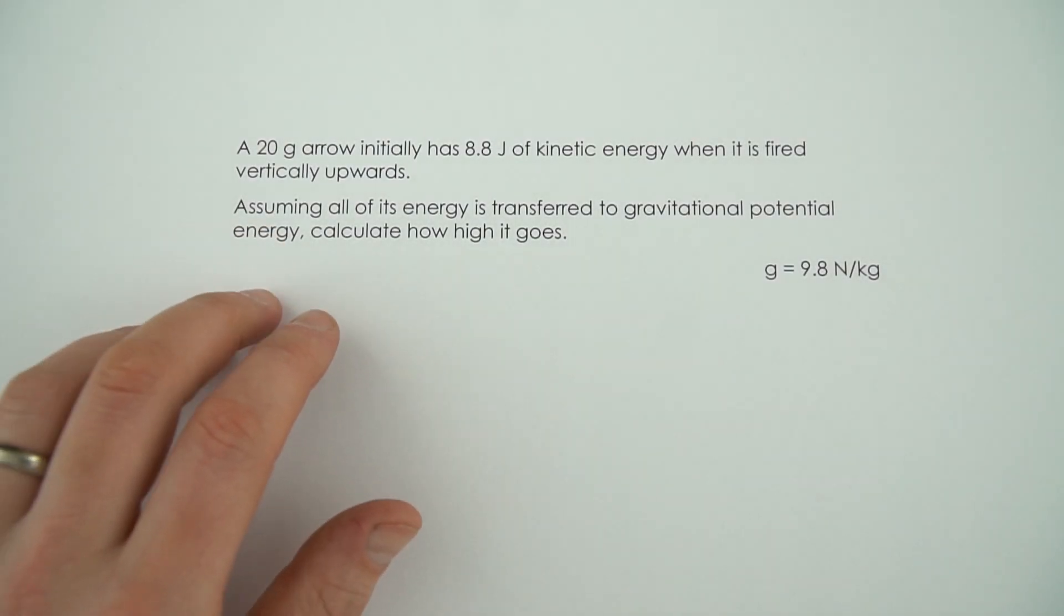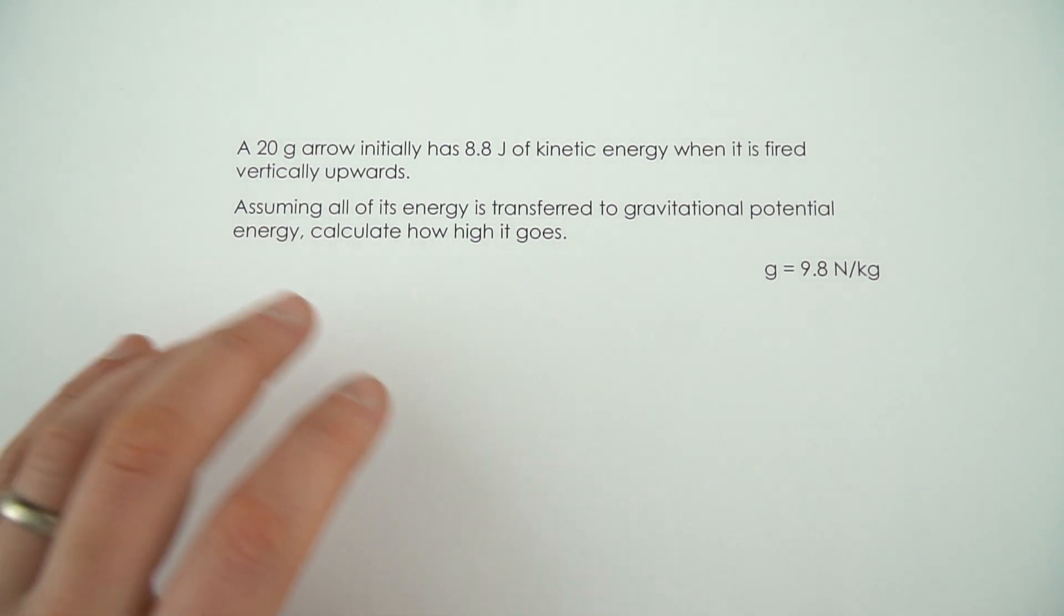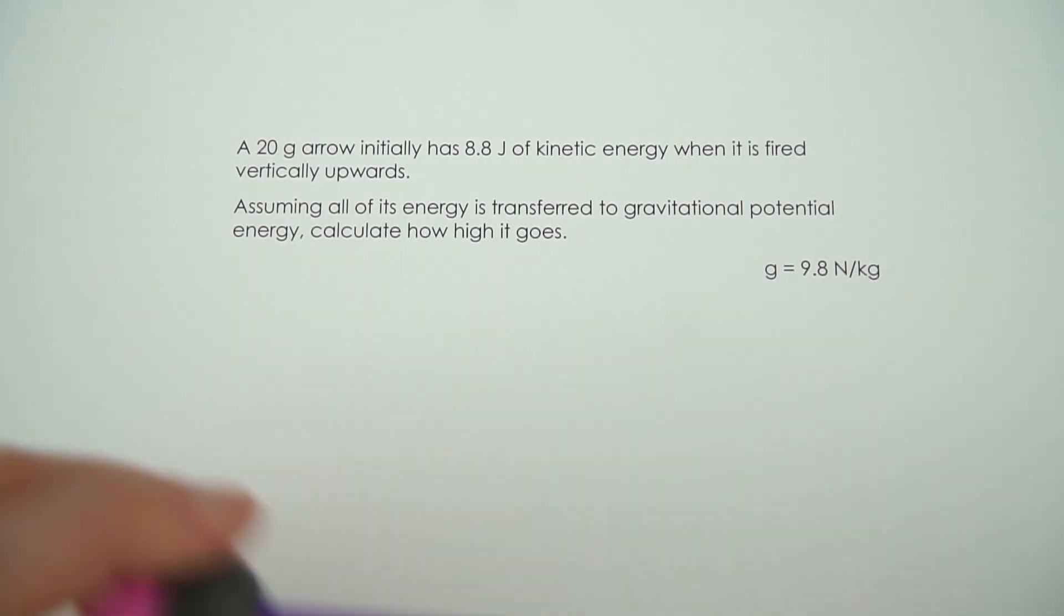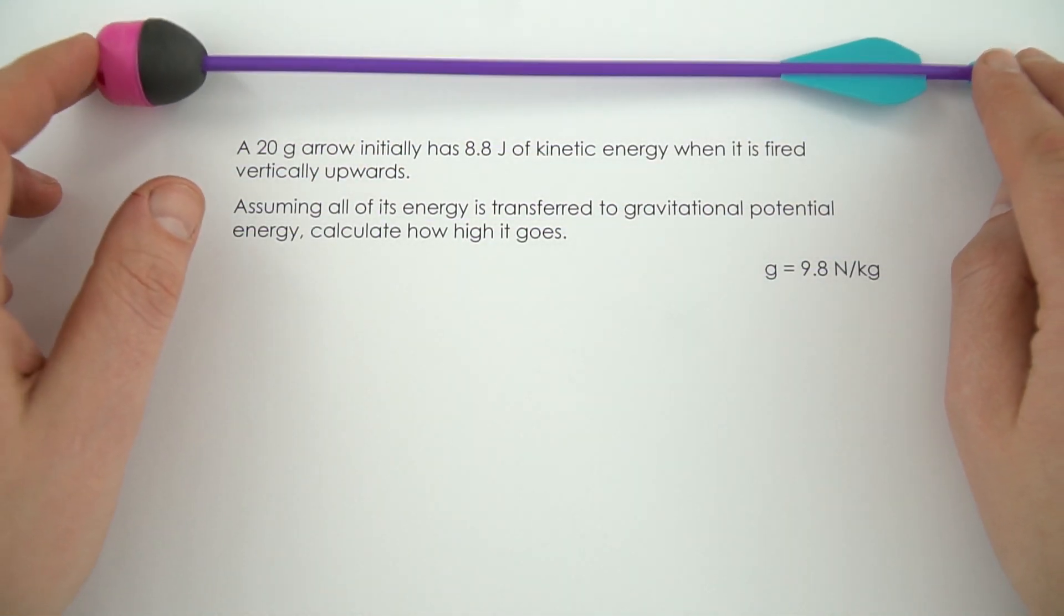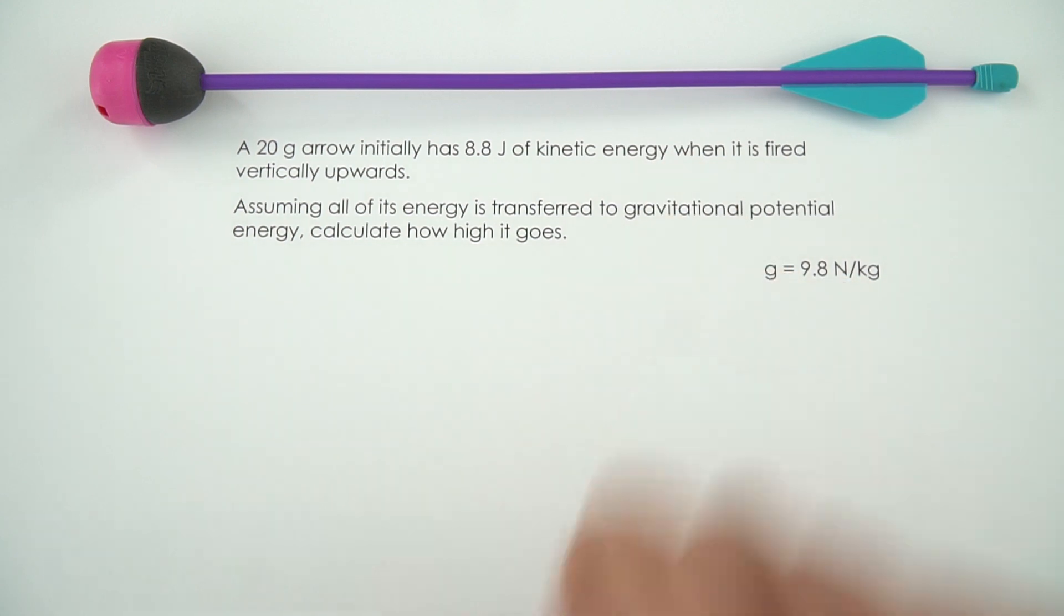This question is a little bit more involved and relies on knowledge about how energy works. We've got a 20 gram arrow that initially has 8.8 joules of kinetic energy when it's fired vertically upwards, and we want to know how high it goes.